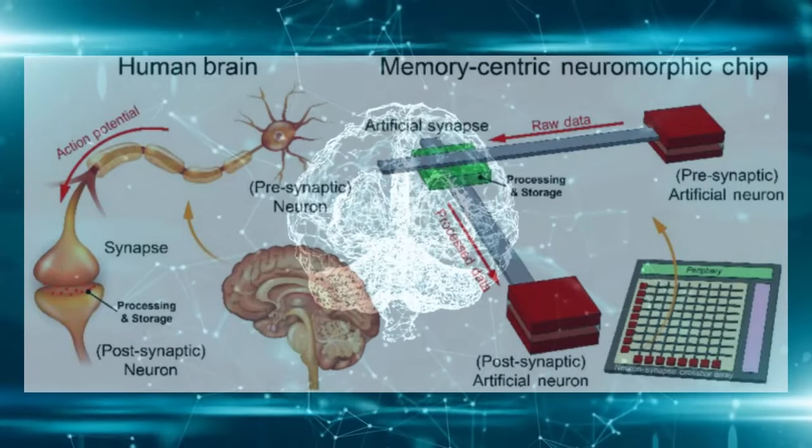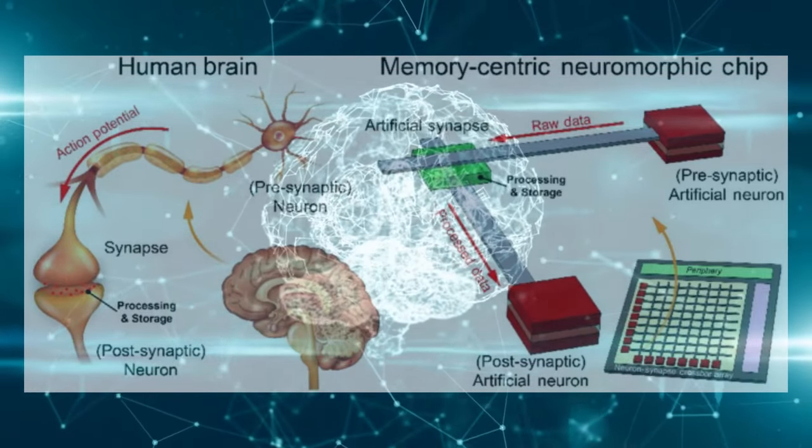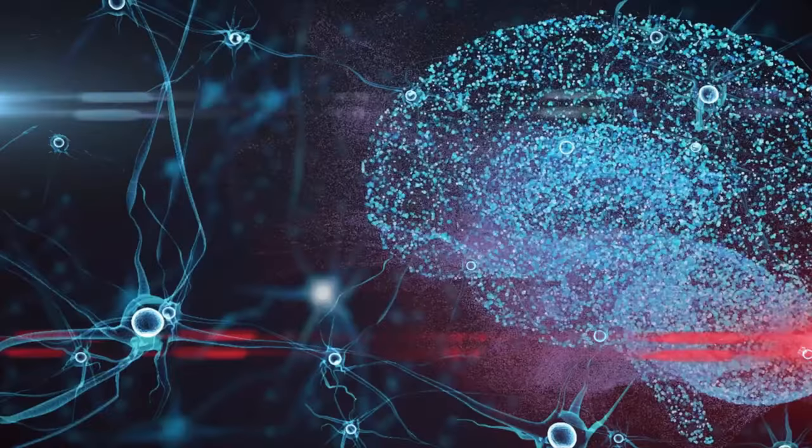The developed neuromorphic memory device also mimics the retaining effect that allows quick learning of forgotten information by implementing a positive feedback effect between neurons and synapses.